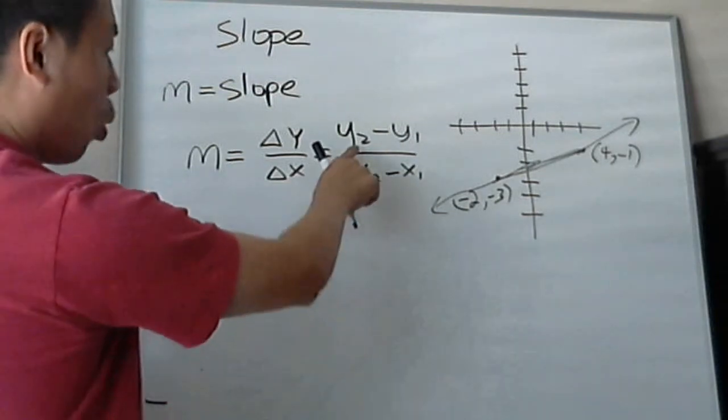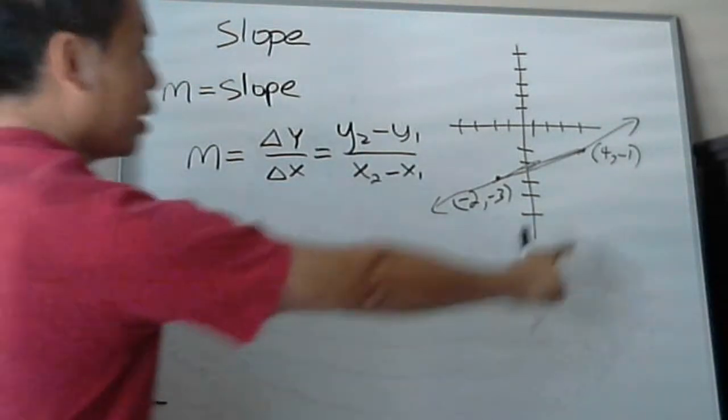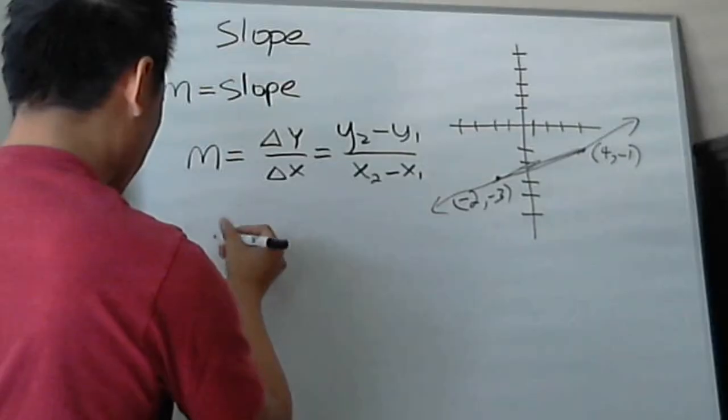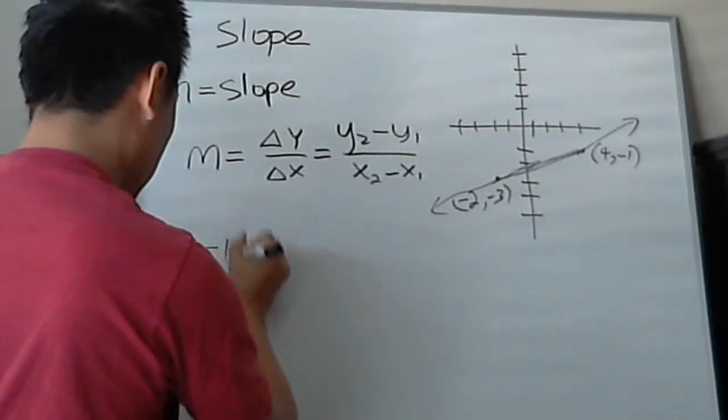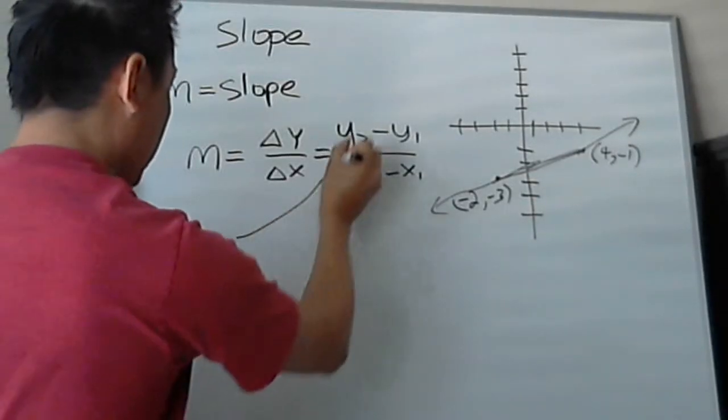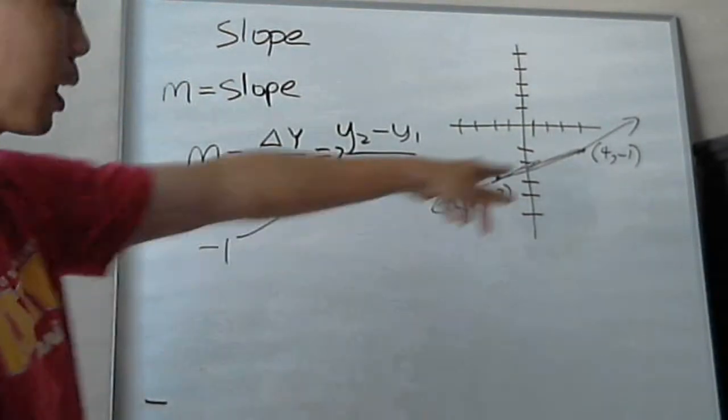So Y2 is the Y coordinate, right? So it'll be negative 1. So let me point that to the Y2. That's where it comes from.